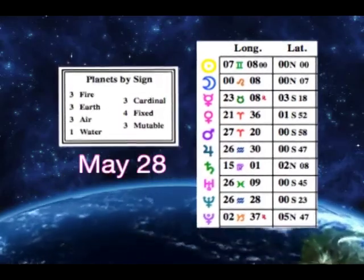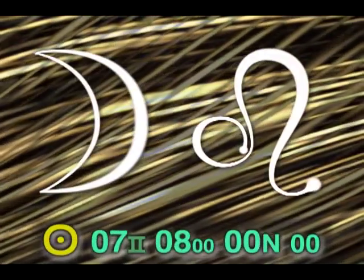Thursday, May 28th. The Moon enters Leo early in the morning. Neptune in Aquarius goes retrograde until November the 4th.